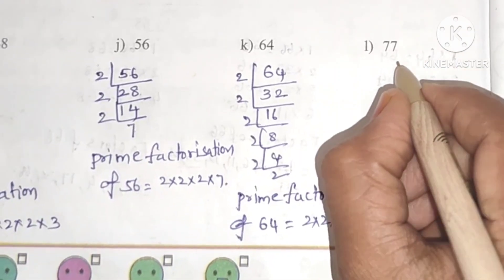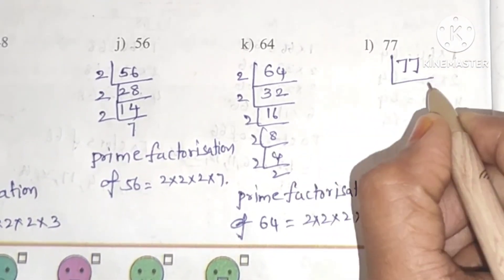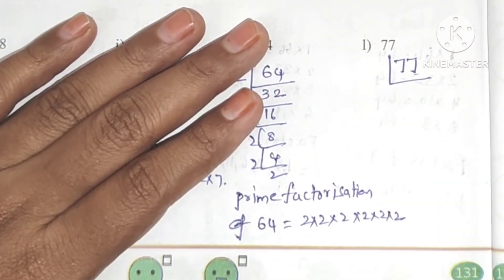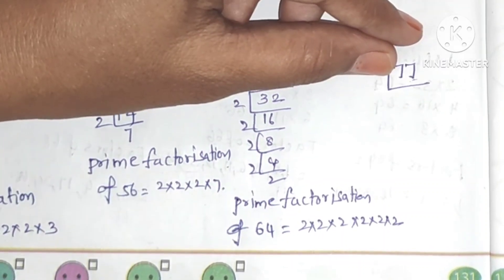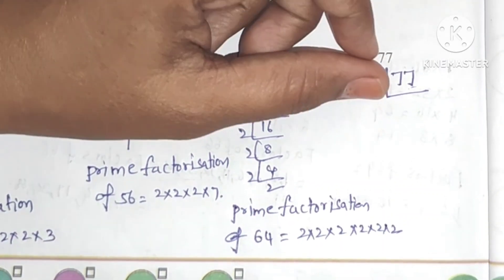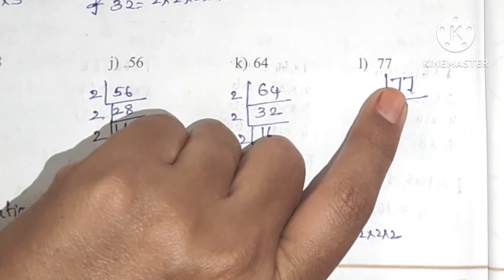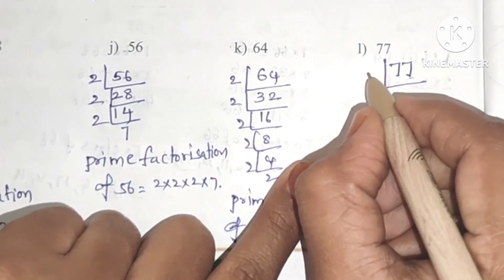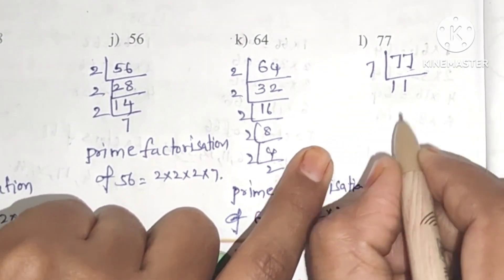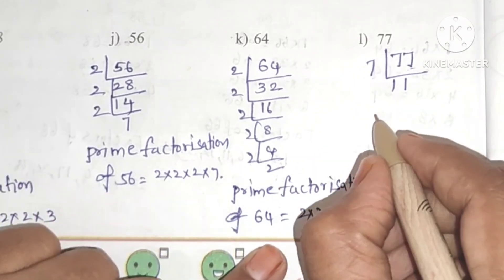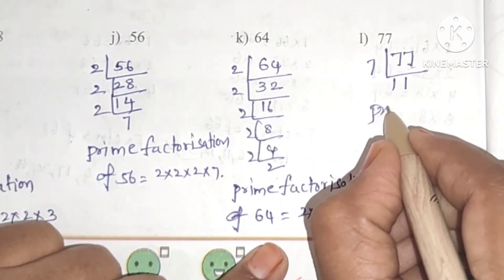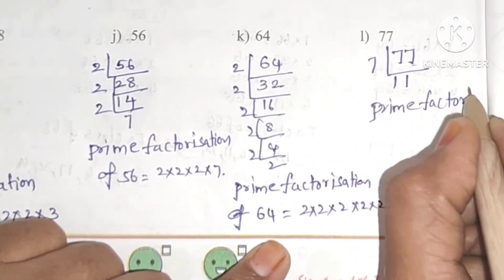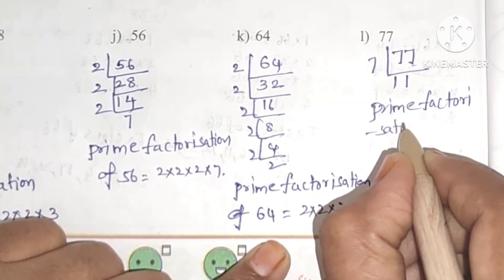Last, 77. Units place 7, so it's not in the 2 table. Sum of digits is 14, so it's not in the 3 table. It doesn't end in 0 or 5, so not the 5 table. Trying 7: 7 elevens are 77. Since 11 is a prime number, we stop. Prime factorization of 77 is 7 into 11.